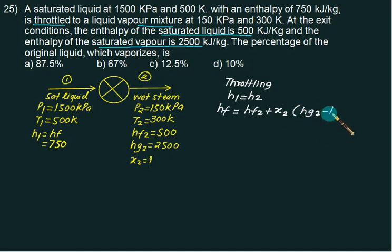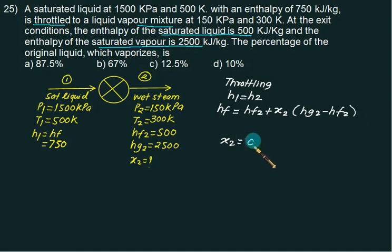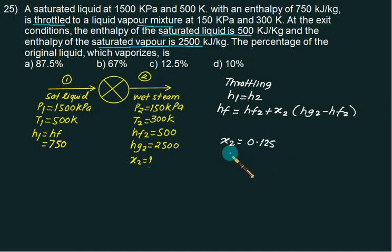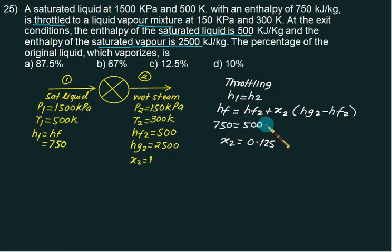Substituting the values — H1 = 750, HF2 = 500, HG2 − HF2 = 2000 — and solving for X2, the dryness fraction comes out to be 0.125.